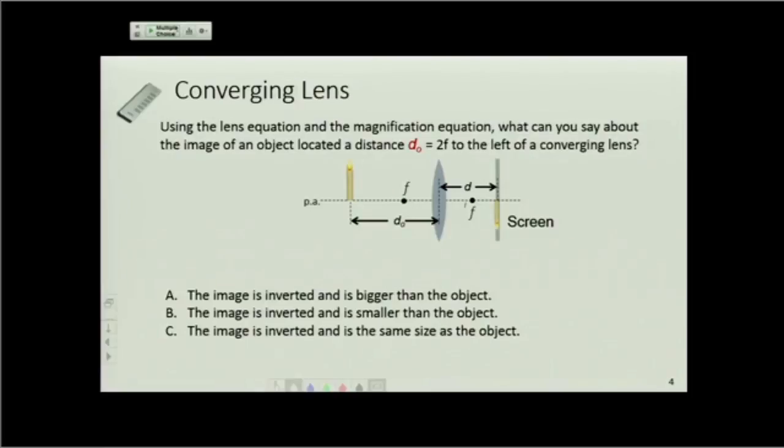oh, pardon me, let me start this off. At twice the object focal length away, so d₀ is 2f, what can you say about the image? Remember the thin lens equation and the magnification equation.